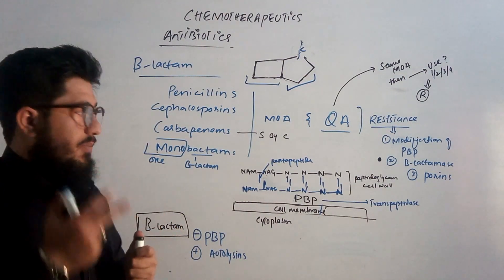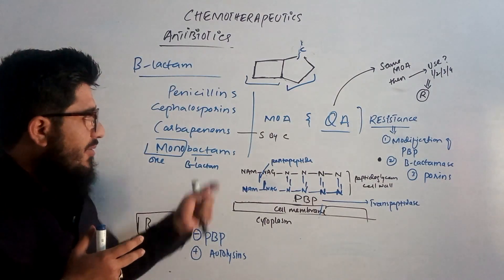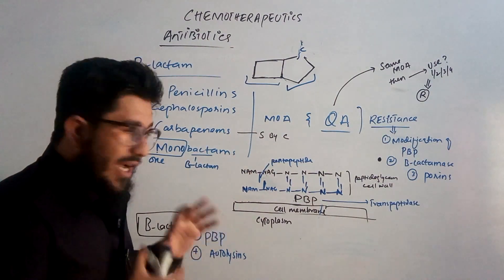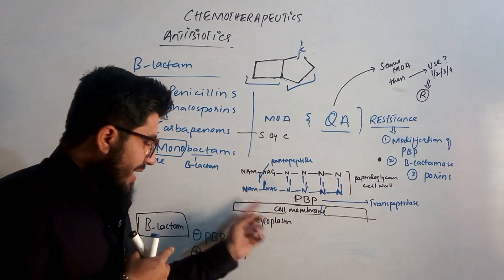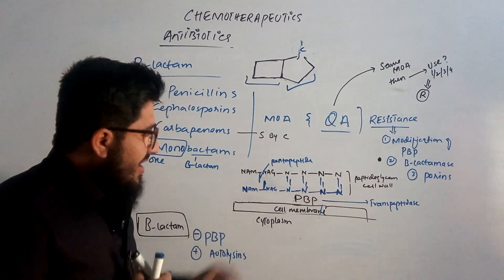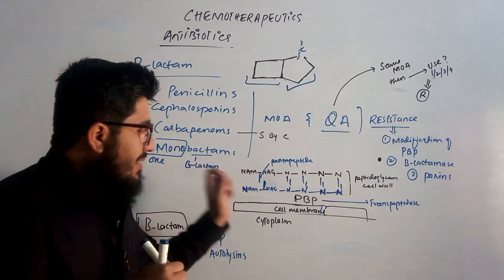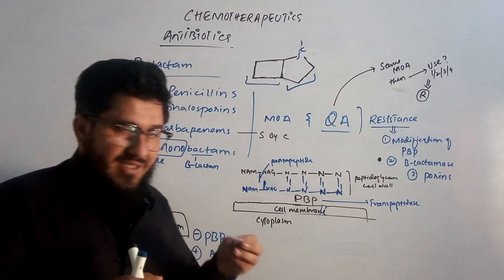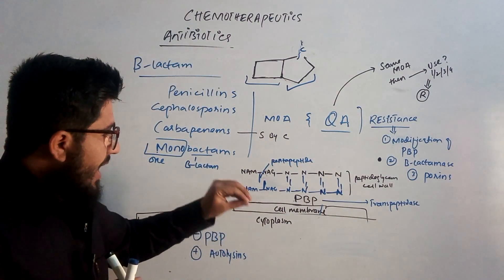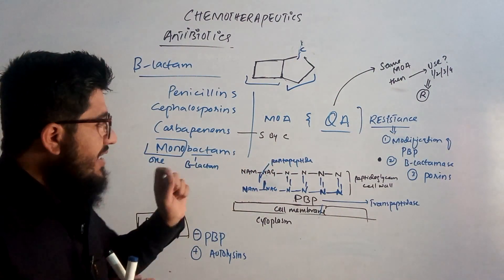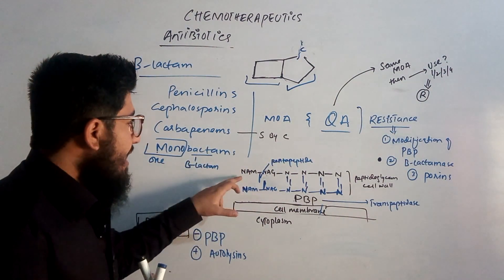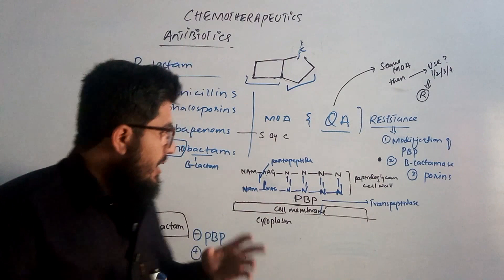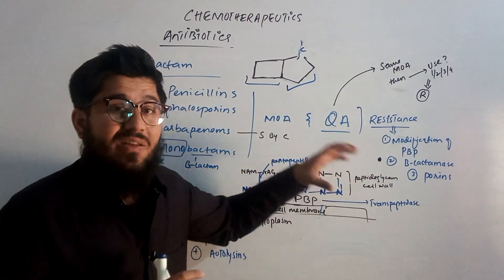Let me first explain the mechanism, then I'll answer that question. The mechanism of action is very simple. The bacterium has cytoplasm and a cell membrane. On the cell membrane, the bacterium has a penicillin binding protein (PBP), also known as transpeptidase — a type of enzyme. The cell wall is made up of NAM-NAG units: N-acetylmuramic acid and N-acetylglucosamine. When combined, these units make the peptidoglycan cell wall.